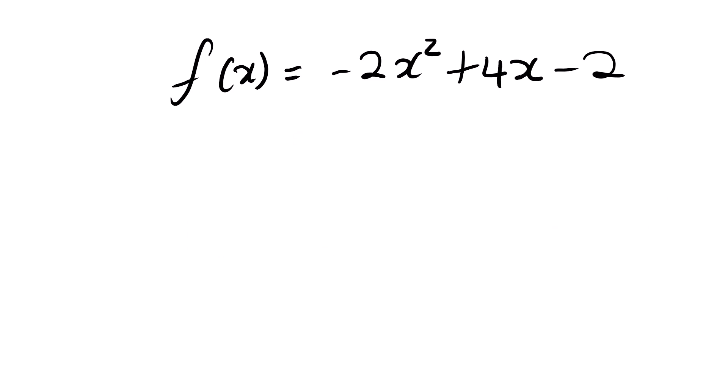We look at our example and work through it. The first step in transforming to the bracket form: we need to make sure that the coefficient of x squared is positive 1. If it's not positive 1, we need to do something with that number.